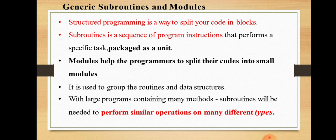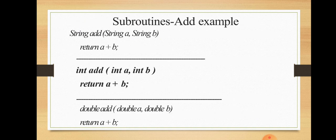For example, I can use the same operation on a loop. Let's look at an example of a subroutine. A subroutine: string add, with parameters string A and string B, returns A plus B. That is a subroutine — that is a function. The name of the function is 'add', it returns a string type, and the actual parameters A and B are both of string type.